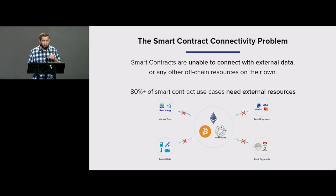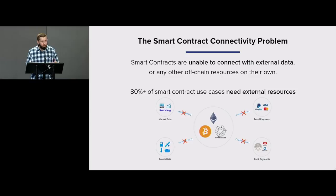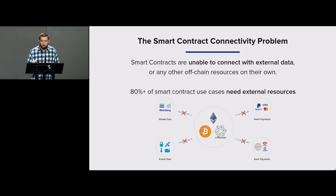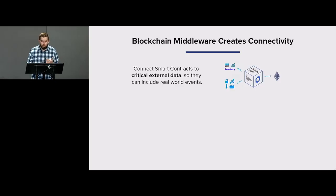If smart contracts are going to become the dominant form of digital agreement, they're going to need to be able to interface with data that proves contractual performance, and they're also probably going to need to be able to pay people in the format in which they would like to be paid. This capability isn't something that smart contracts have out of the box. The problem is that smart contracts themselves cannot talk to data feeds — they cannot know anything about market prices, external IoT events, or any other data that doesn't already exist on their network.